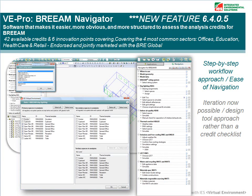There is a slight difference in the way calculations are done for different building types. This is picked up by the Navigator, which saves the designer having to refresh their knowledge for each building they design. So if you are doing an educational facility, it will reference the correct documents to test against the criteria laid out.